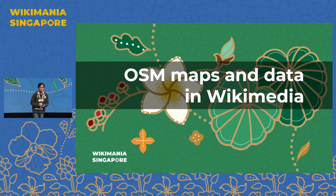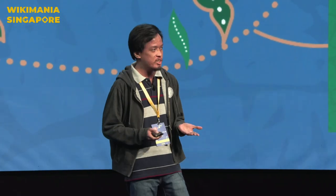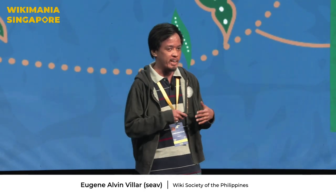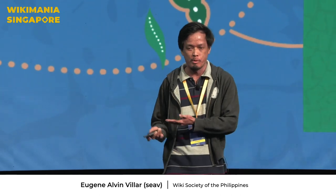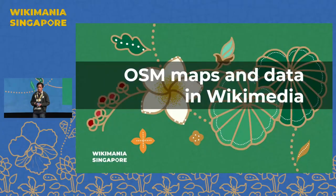Dennis gave you an introduction of what OpenStreetMap is and how we can connect these two open data projects together — you can link from OpenStreetMap to Wikidata and vice versa. What I'll be demonstrating now are some of the ways the Wikimedia and OpenStreetMap projects are sharing data with each other.